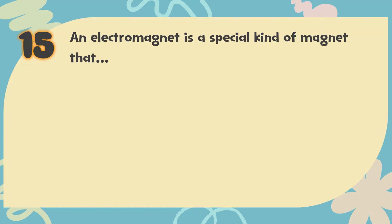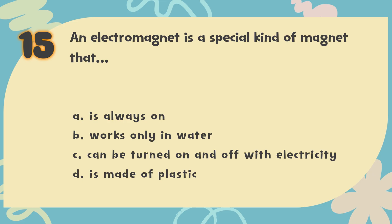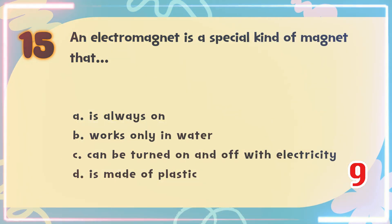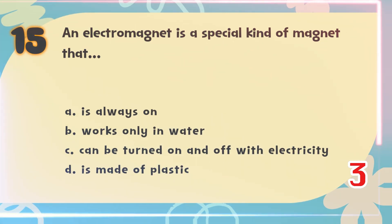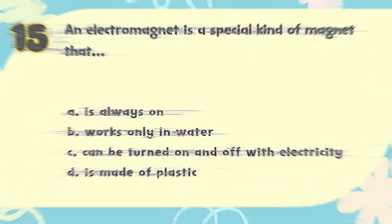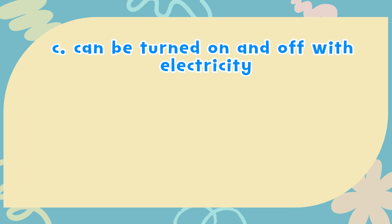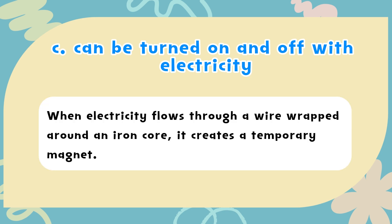Number 15: An electromagnet is a special kind of magnet that — A. Is always on, B. Works only in water, C. Can be turned on and off with electricity, D. Is made of plastic. The correct answer is C. Can be turned on and off with electricity. When electricity flows through a wire wrapped around an iron core, it creates a temporary magnet.